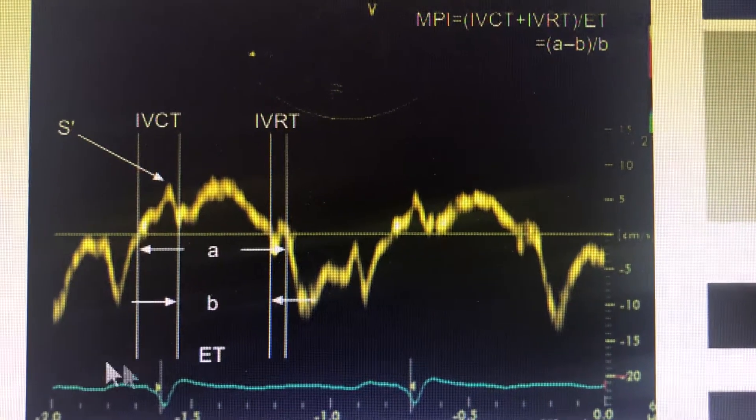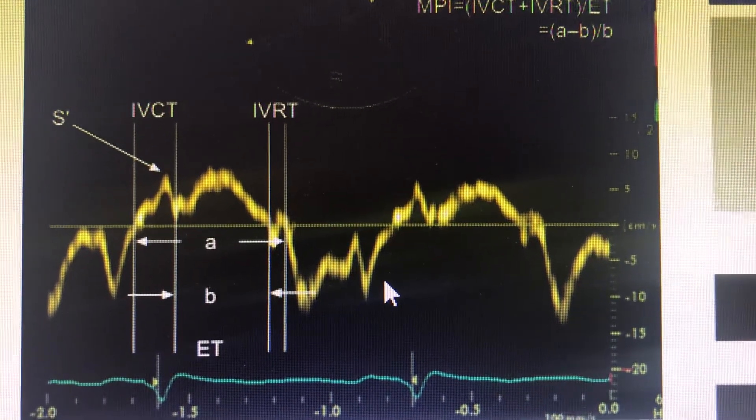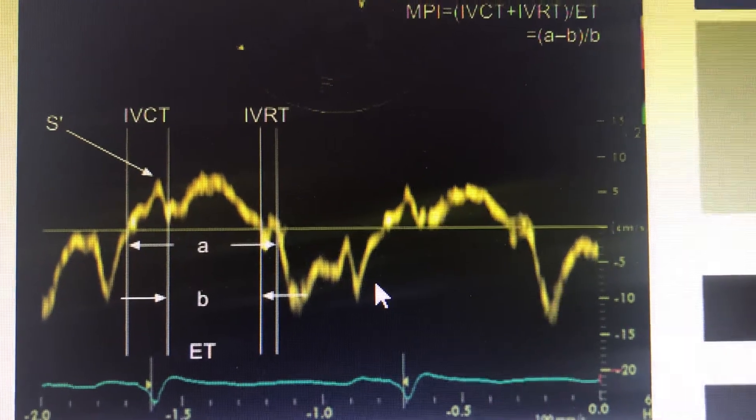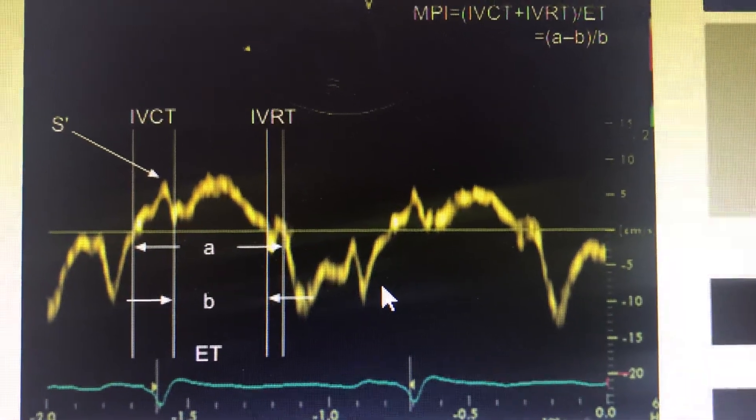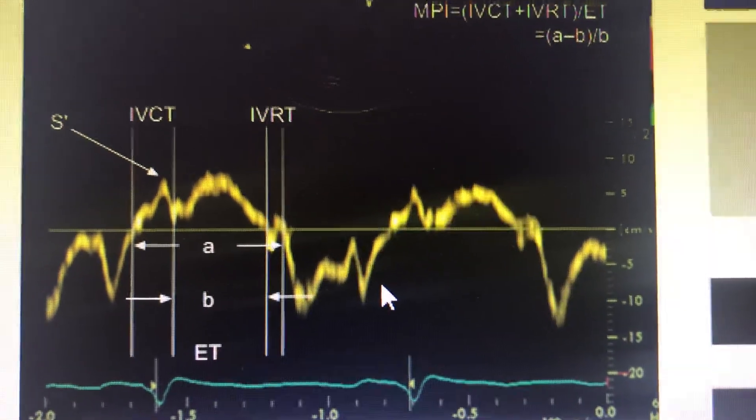Now we're coming to another endpoint of RV assessment, the myocardial performance index. As with the left ventricle, it is also done for the right ventricle.